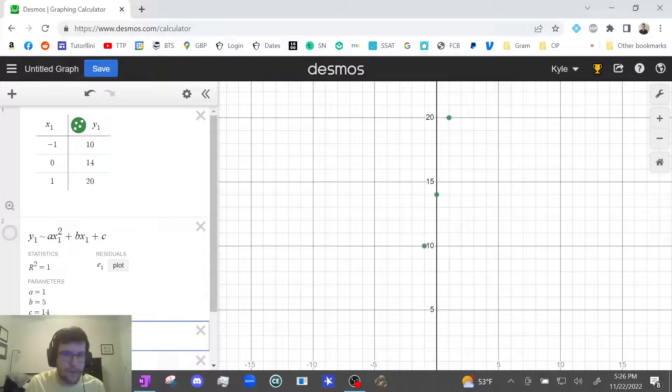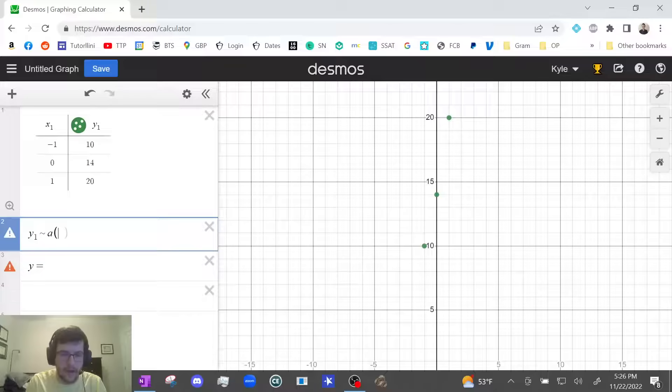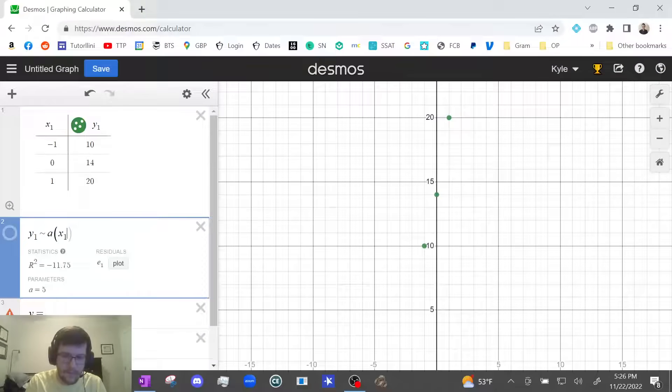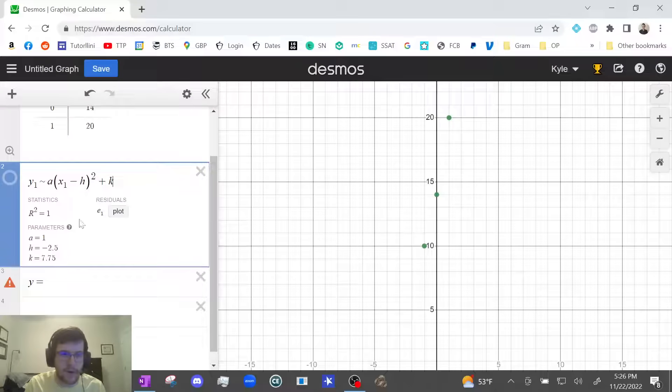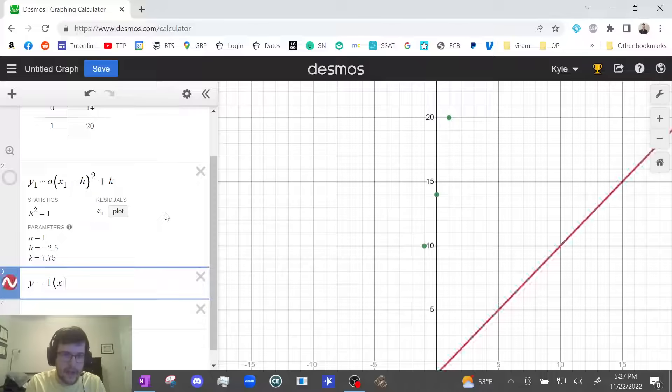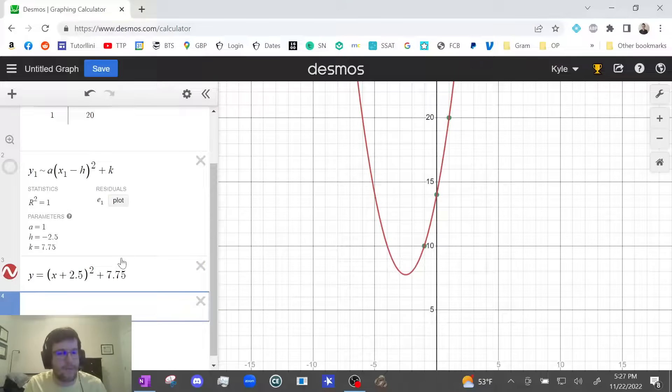What if, let's say I didn't want standard form. I want vertex form. So let's type that in. A times x1 minus h squared plus k. Oh you see I get a perfect regression. And that would be a equals 1, h equals negative 2.5, and k equals 7.75. So let me write that down. 1 times x minus negative 2.5, which is the same as plus 2.5, squared plus k plus 7.75. And again, we don't write 1 as a coefficient. It's implied.